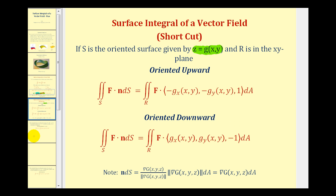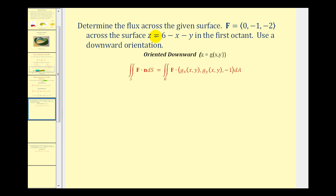Let's take a look at our first example. Here we want to determine the flux across the given surface where the vector field is equal to zero, negative one, negative two, and the surface is z equals six minus x minus y. So the first thing we should recognize is that G of x and y is going to be equal to six minus x minus y.